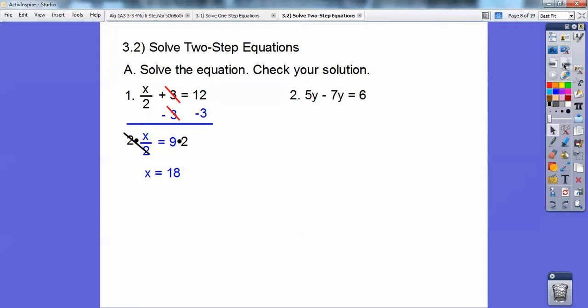Okay, here, 5y minus 7y equals 6. 5y minus 7y is negative 2y. Then divide both sides by negative 2. Here I have positive 6 divided by negative 2. Over here, that cancels. I get y equals negative 3.